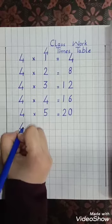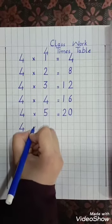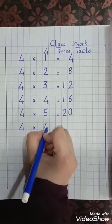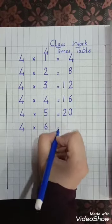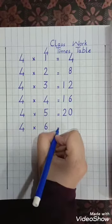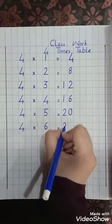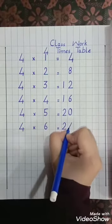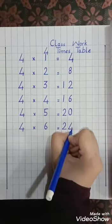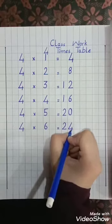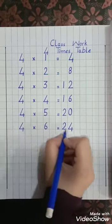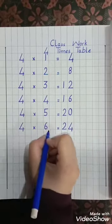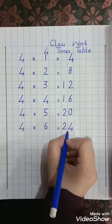Four, multiply, six, equal lines — 24. Four sixes are 24. Four sixes are 24.